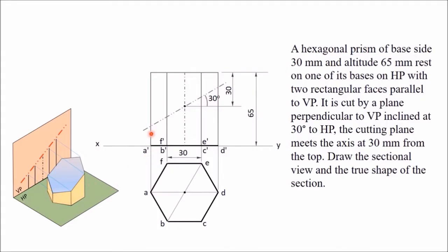You can see one edge passing through A, another edge passing through B, C, D, E, and F. So this section plane is cutting these six edges. Mark all these points: 1 dash is where the section plane cuts the vertical edge from A. Similarly, 2, 3, 4, 5, and 6 points are marked — 2 dash, 3 dash, 4 dash. Now 5 dash is behind 3 dash, and 6 dash is also marked. All points are now marked.